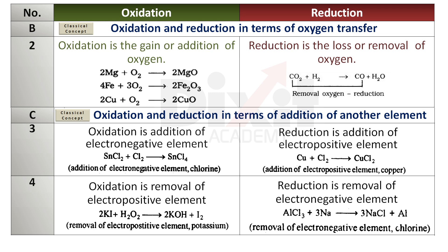Point number 3: Oxidation is the addition of an electronegative element. Example: addition of electronegative chlorine to stannous chloride to form stannous chloride. Reduction is the addition of an electropositive element. Example: addition of electropositive copper to chlorine to form cupric chloride.